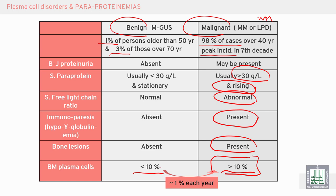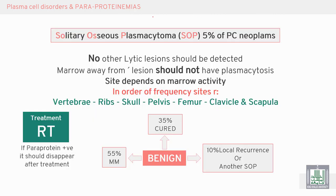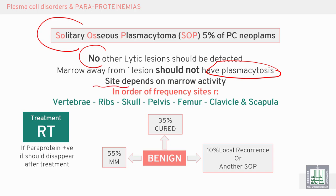We must differentiate between benign MGUS and malignant monoclonal gammopathy. Solitary osseous plasmacytoma is a single osseous lesion with no other lytic lesions elsewhere. Areas away from the lesion should not have plasmacytosis or plasma cells in the peripheral blood. Sites vary and may include vertebra, rib, skull, pelvis, femur, clavicle, or scapula — it is a solitary bone lesion.